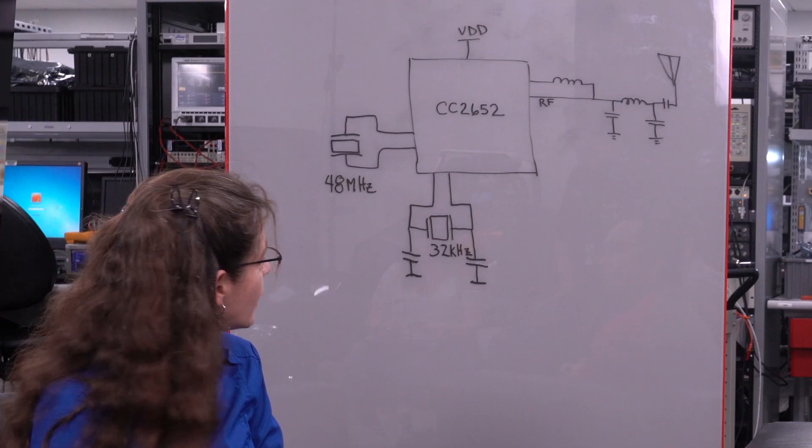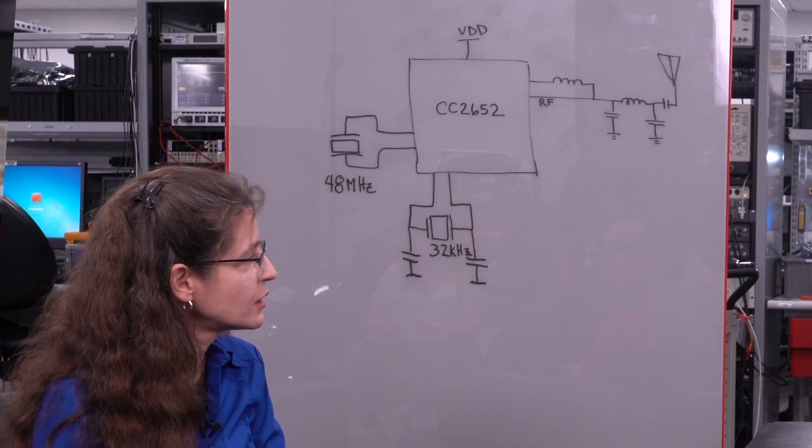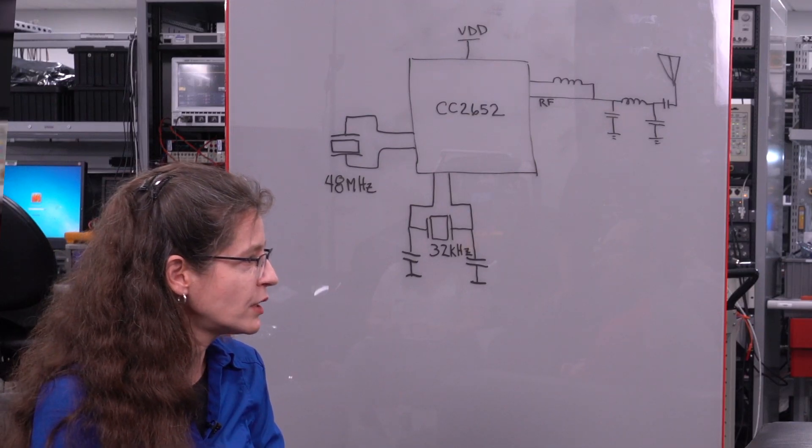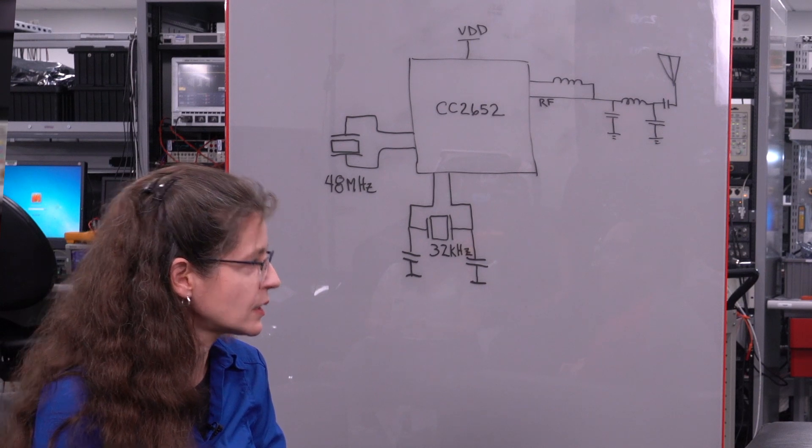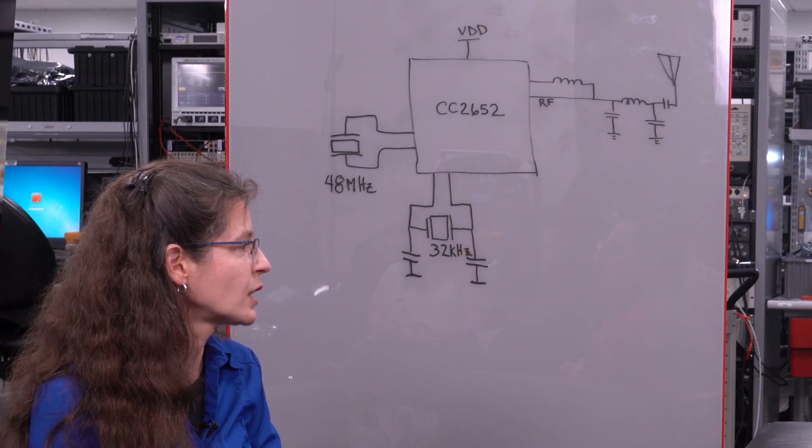And what are the roles that these crystals play? The 48 megahertz crystal is used for generating the accurate clock used for the RF, so that you transmit on the right frequency to meet your emissions requirements for standards, and so different devices can talk to each other. The 32 kilohertz crystal is a very low powered oscillator that's used for generating a real time clock.